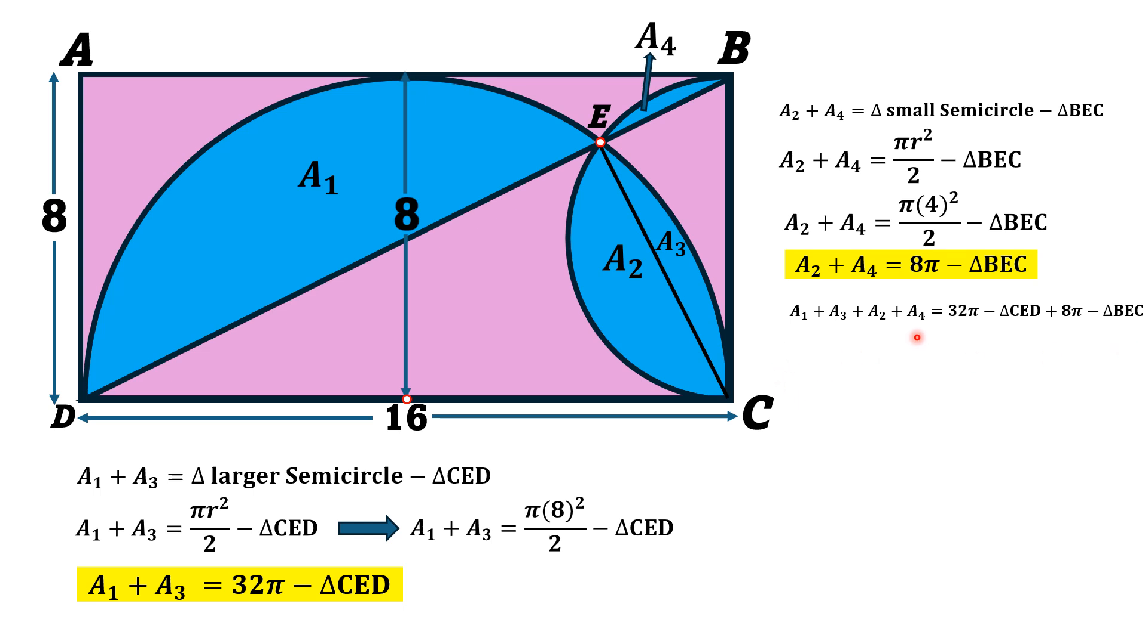This area on the left is actually the blue shaded area. So we write it as blue shaded area. 32π plus 8π is 40π. And we take minus as common.